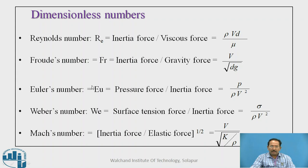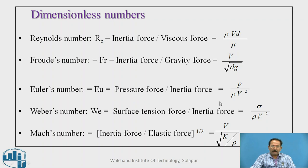The third is Euler's number, where pressure force is the predominating force. It is the ratio of pressure force to inertia force: Eu = p / (ρV²). If you take inertia upon pressure force, you get the inverse of this equation.